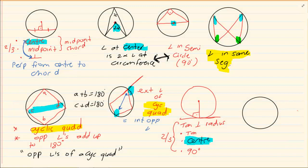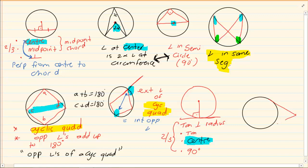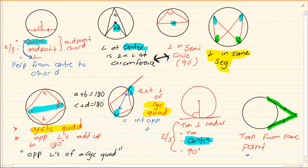The next tangent theorem is tangents from the same point. If you have two tangents from the same point, then the length from that point to where each tangent touches the circle is equal in length.